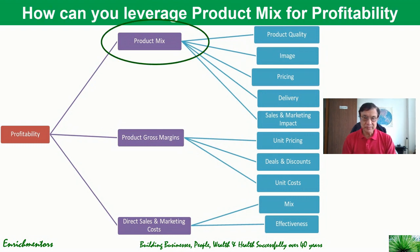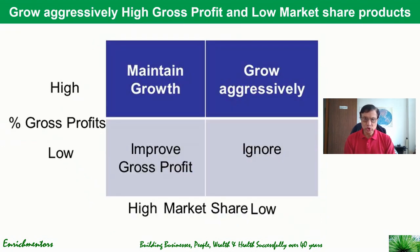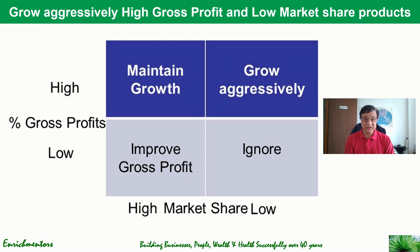Let's look at the first driver: product mix. The strategy here is to look at your entire product portfolio and classify products into two dimensions: percentage gross profits — whether they are higher or lower — and market share — whether they are currently high or low. Focus on products that have high percentage gross profits but relatively low market share to grow aggressively, because growing these improves profitability while there is headroom to grow market share.